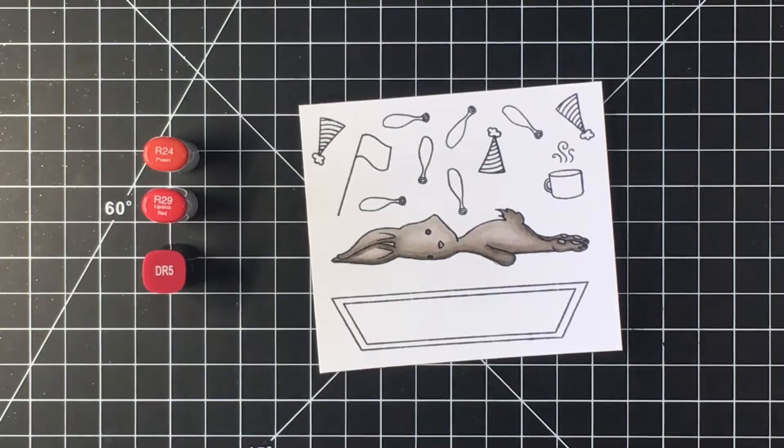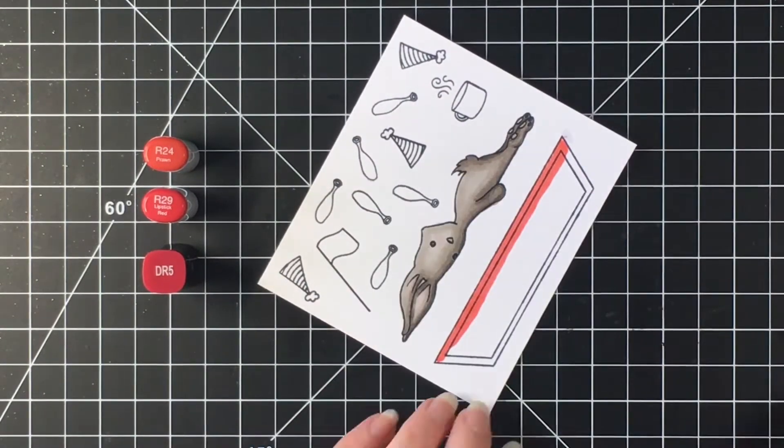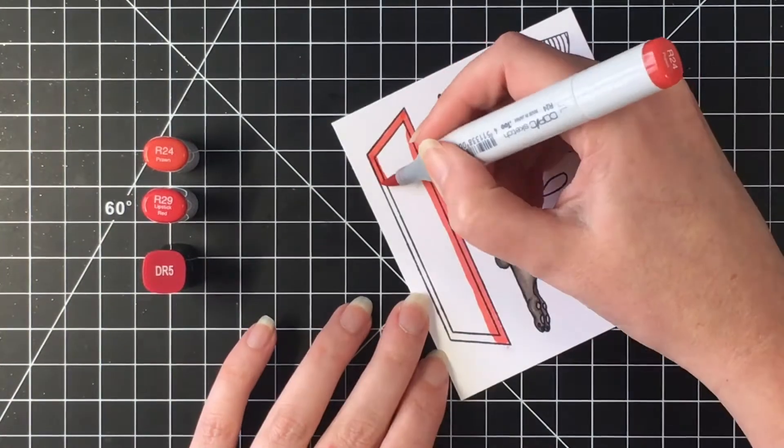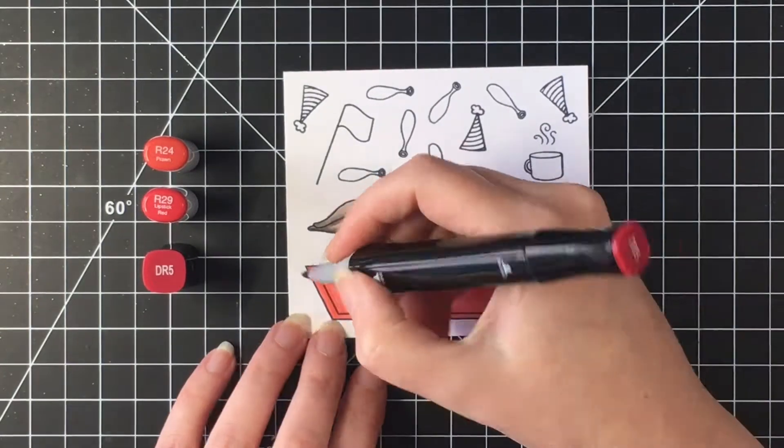So I'm really happy with how that looks. Now I'm going to move on to the little carpet area and I'm doing that in red. I'm not worried about getting a smooth blend as the bunny will cover up most of the carpet when she is laying on it.